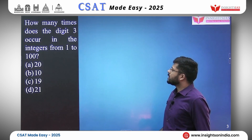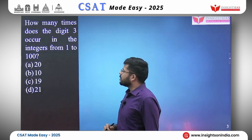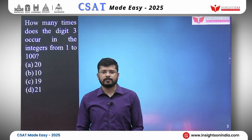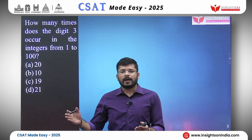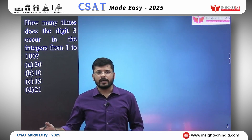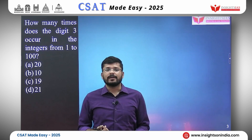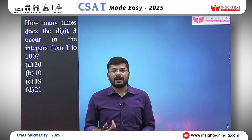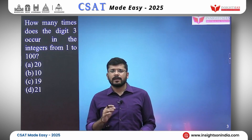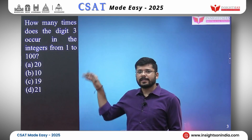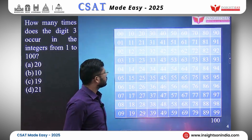How many times does the digit 3 occur in the integers from 1 to 100? Let us consider all 100 integers from 1 to 100 and count how many times the digit 3 occurs. Let us draw and write the numbers out so that it is easy for us to imagine.